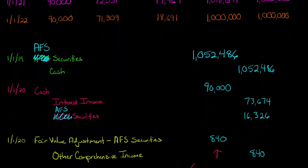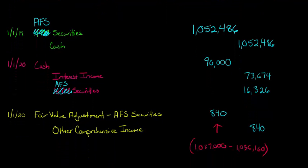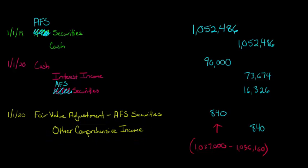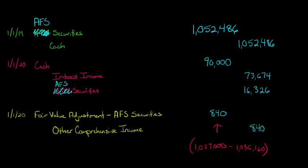This difference is going to go to Other Comprehensive Income, so it's not going to be a gain or loss on our income statement. This is ultimately going to end up in Accumulated Other Comprehensive Income, which is a part of equity, but it's not going to affect net income for this period. If we were to sell these securities and realize a gain or loss, then the realized gain or loss would go to the income statement. But because we haven't sold these securities yet, it's going to bypass net income and go to Other Comprehensive Income.